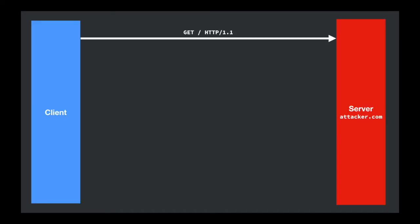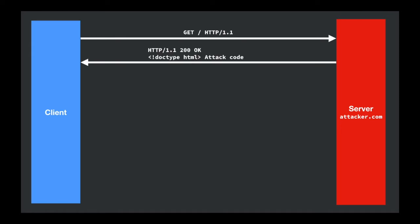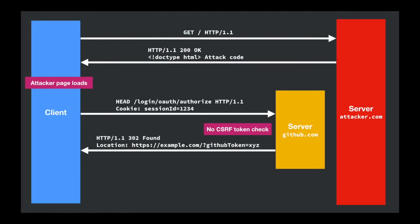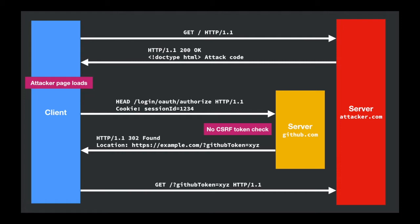This is how the attack would have worked: you visit the attacker's server — you just click a link and end up on the attacker's page. You get back some HTML that causes a HEAD request to go to github.com/login/oauth/authorize with an app ID in the URL. Your cookies are sent. There's no CSRF token in sight, and the server doesn't bother checking. It sends back 'authorized' and redirects you to the attacker's server with the GitHub token. Just like that.